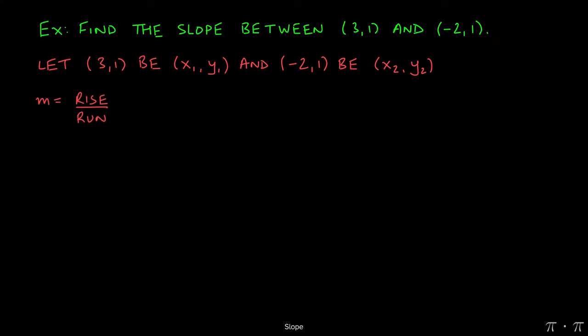As usual, the slope can be found by finding the quotient between rise and run, which is the same as a change in y divided by a change in x, which can be represented by the formula y2 minus y1 over x2 minus x1.